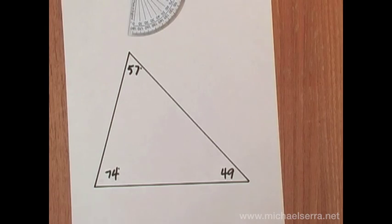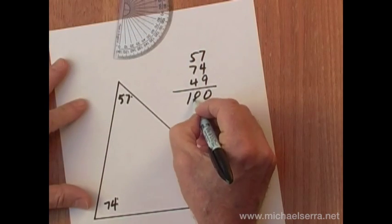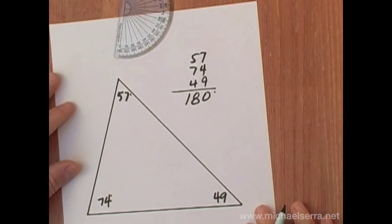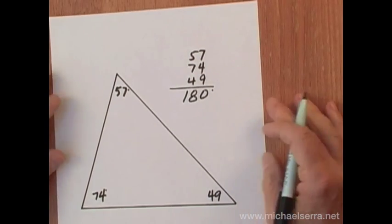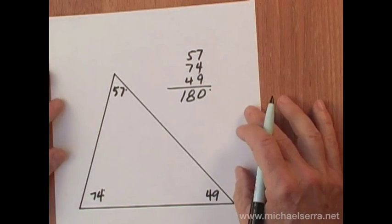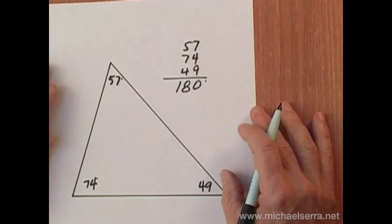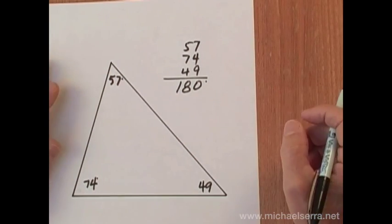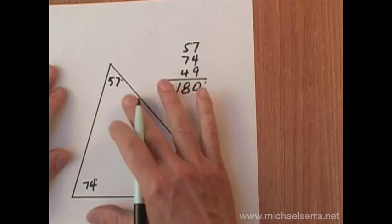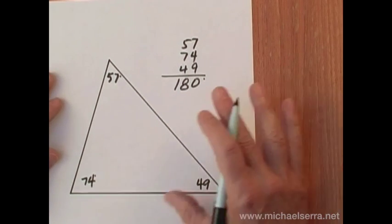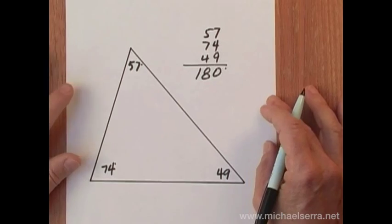And getting the sum, lo and behold, 180 degrees. If we were to do that for another triangle, and each student is doing this, hopefully we will not always get 180, but somewhere in that neighborhood of 180 degrees, and then the student should be ready to make their conjecture.